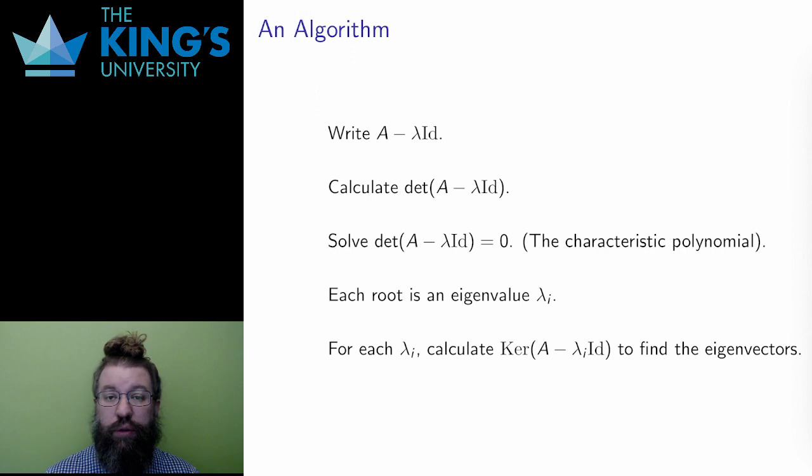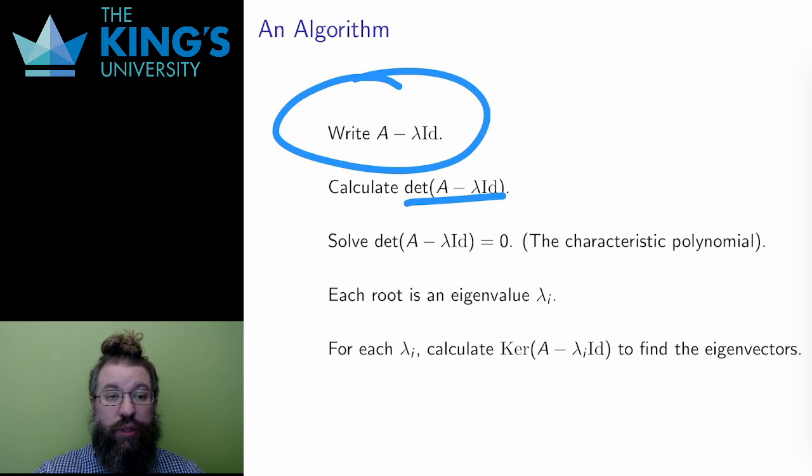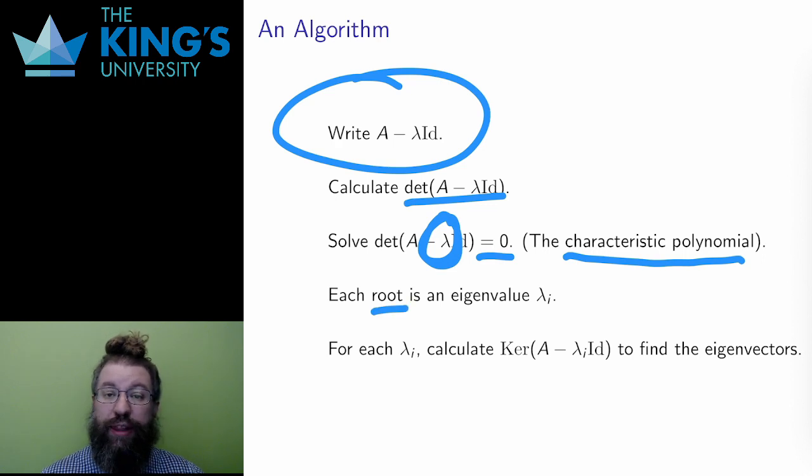So let me present this as an algorithm. I write down the matrix A minus lambda identity. I calculate its determinant. I set that determinant equal to zero. This determinant will always be a polynomial in lambda. So it is called the characteristic polynomial. I try to find the roots of that polynomial. These roots lambda will be the eigenvalues.